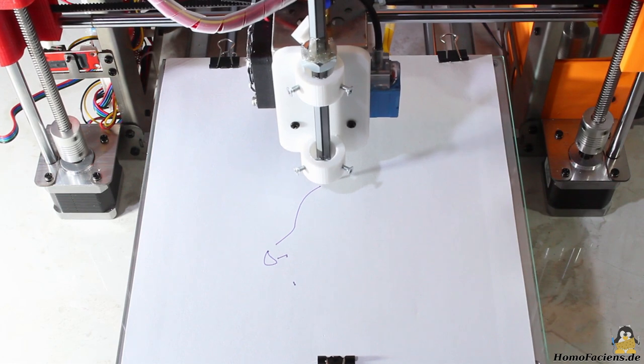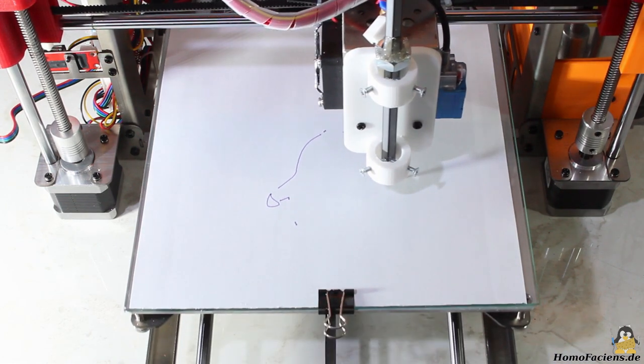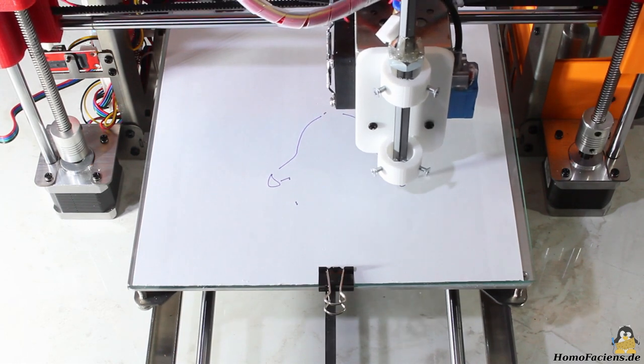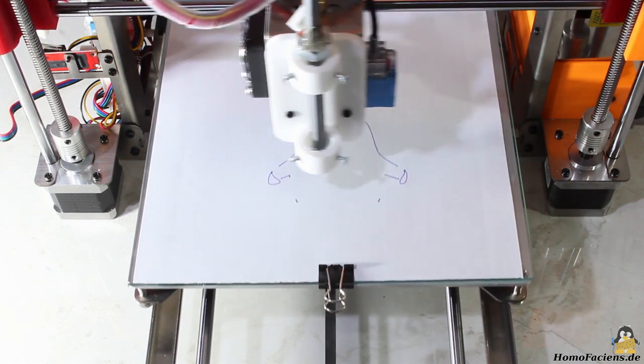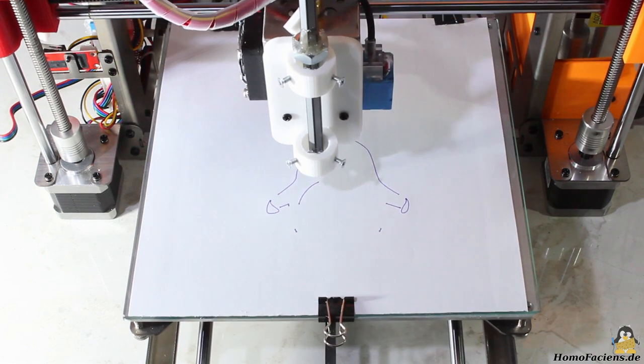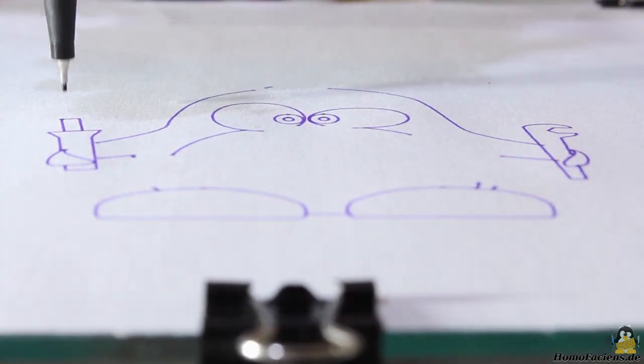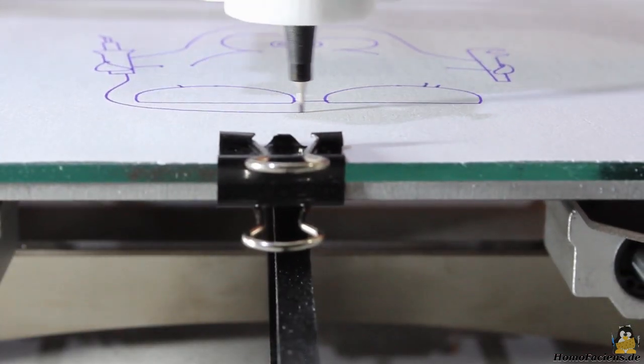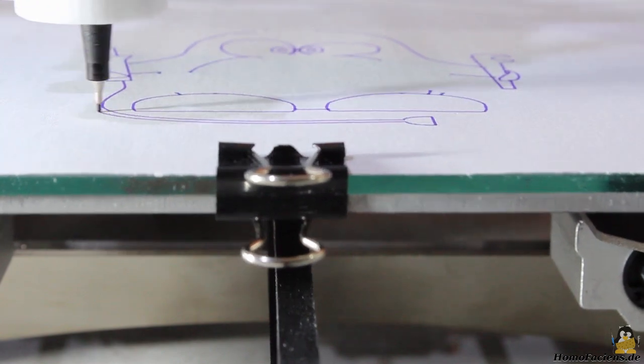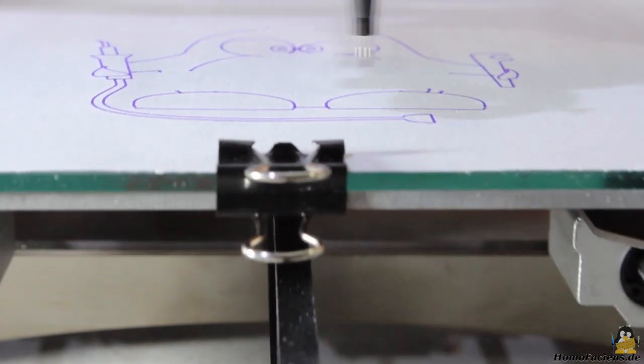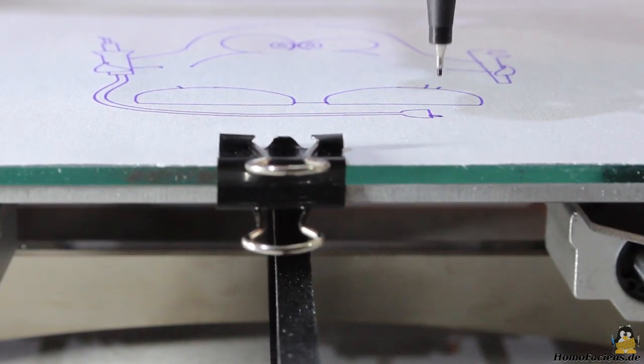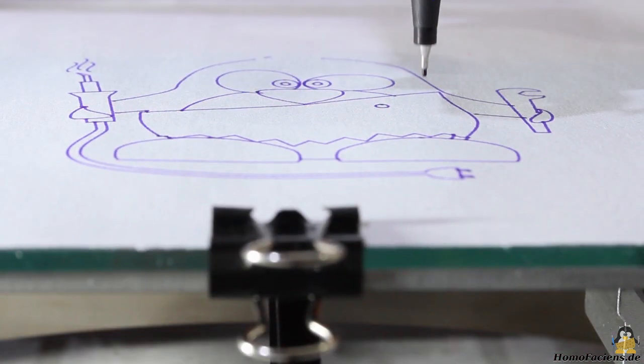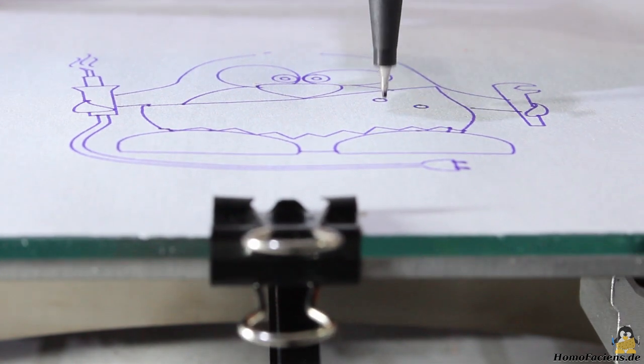Secondly, you must set the maximum speed while drawing on the surface, and finally the maximum speed when moving to the next line with the pen lifted above the surface. For my first test, I've set the drawing speed to 30mm per second, the movement between lines to 100mm per second, and the lift of the pen to 10mm.